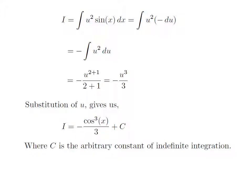We had solved the integration in terms of u; now we need to take back the expressions in terms of x. For that, I have replaced u by cosine of x, which we had assumed earlier. So the integral i, which is the integral of square of cosine of x into sine of x, is equal to minus of cube of cosine of x divided by 3, then added capital C, which is the arbitrary constant of indefinite integral. Do not forget to add this constant at the end of any indefinite integration.